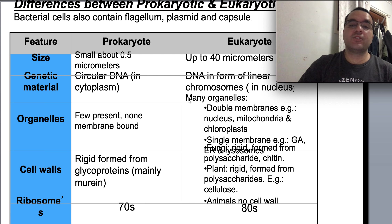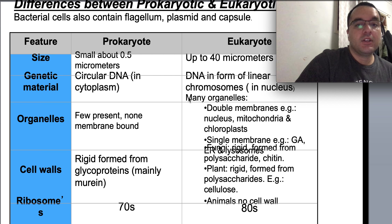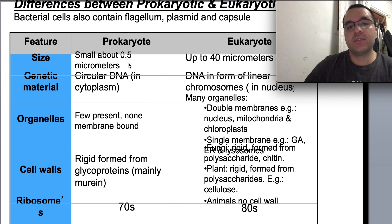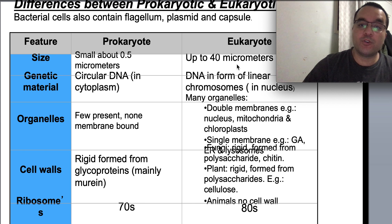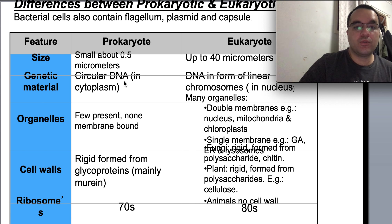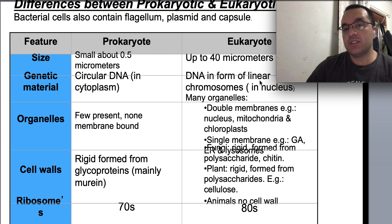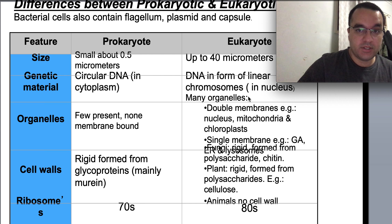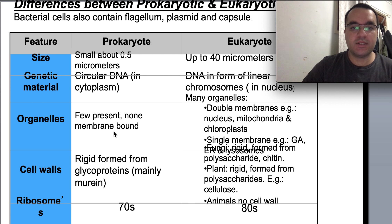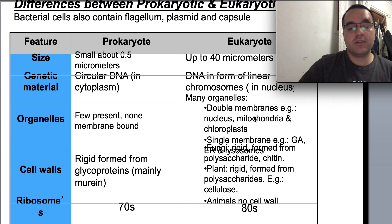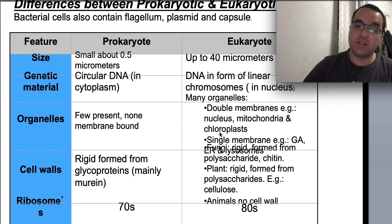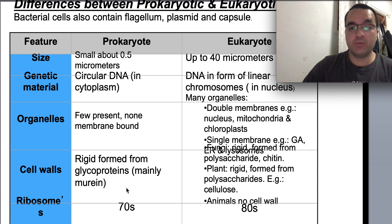This table summarizes the differences between prokaryotic and eukaryotic cells. In terms of size, prokaryotic cells are about 0.5 micrometers while eukaryotes are up to 40 micrometers. Regarding genetic material, prokaryotes have circular DNA in the cytoplasm with no nucleus, while eukaryotic cells have linear DNA in the form of chromosomes inside a nucleus. Prokaryotes have few organelles, none membrane-bound, while eukaryotic cells have many membrane-bound organelles such as mitochondria, chloroplasts, and nucleus. The composition of the cell wall and the ribosomes also differ between prokaryotic and eukaryotic cells.